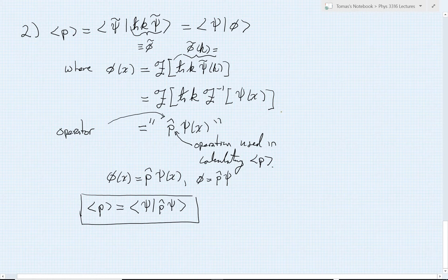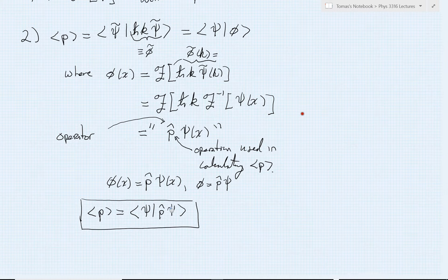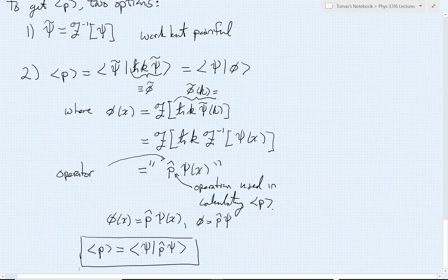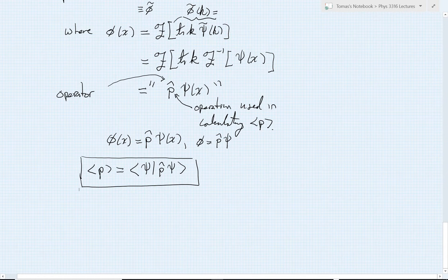Everything is now defined in the position representation in terms of ψ(x). However, this hasn't actually made things better — it's made things worse. Originally it was painful to calculate ψ̃, and now we actually have to do two nasty Fourier transforms. The result is nice and general, but in this form it's a pain. The beauty is that oftentimes there are shortcuts for calculating these operators.